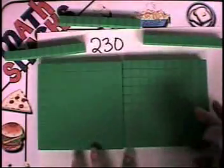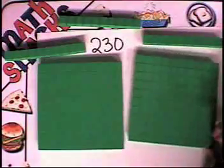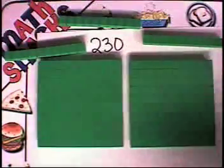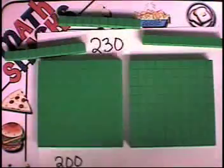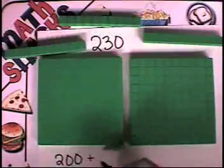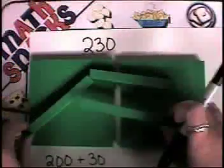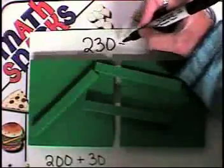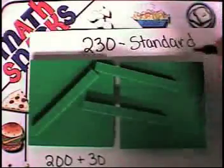230. If we were going to write this, this is written in standard notation. Yes, it is. What if we're going to write it in expanded? Let's write what you did with the hundreds first. There would be two hundreds. Two hundreds. And plus, how many tens? Three tens makes 30. Two hundred plus 30. So this is standard.